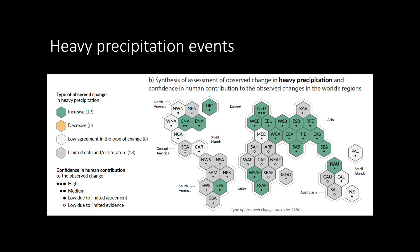This figure shows the assessment of observed change in heavy precipitation and the confidence in human contribution. This assessment is based on changes in indices of one-day and five-day precipitation amounts. Note again that in Southeast Asia, there has been an increase in heavy precipitation, although with low confidence that it is due to human influence.